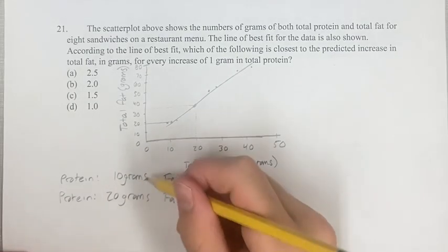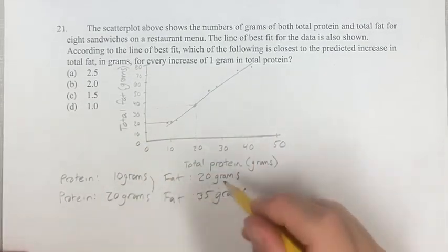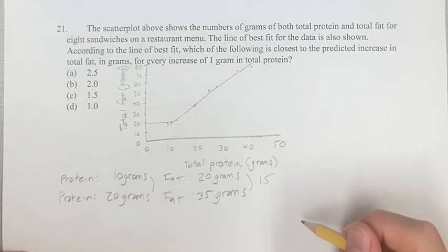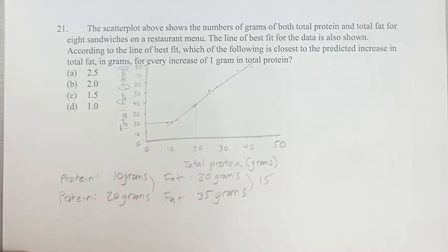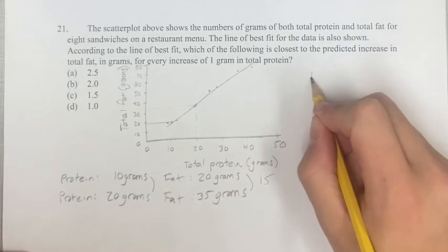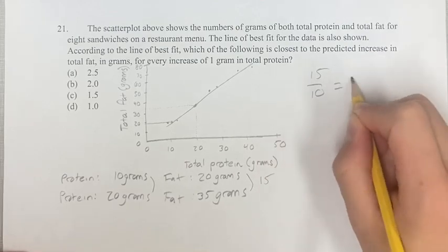So when the protein increases by 10, the fat increases by 15. Okay, so if we're looking for the protein increasing by one, that's going to be this increase divided by 10. So 15 divided by 10 is 1.5.